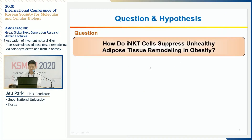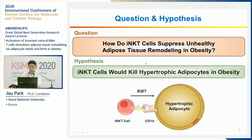However, there is little evidence about the mechanisms by which iNKT cells regulate adipose homeostasis and suppress unhealthy adipose remodeling in obesity. So my main question is: how do iNKT cells suppress unhealthy adipose remodeling in obesity?